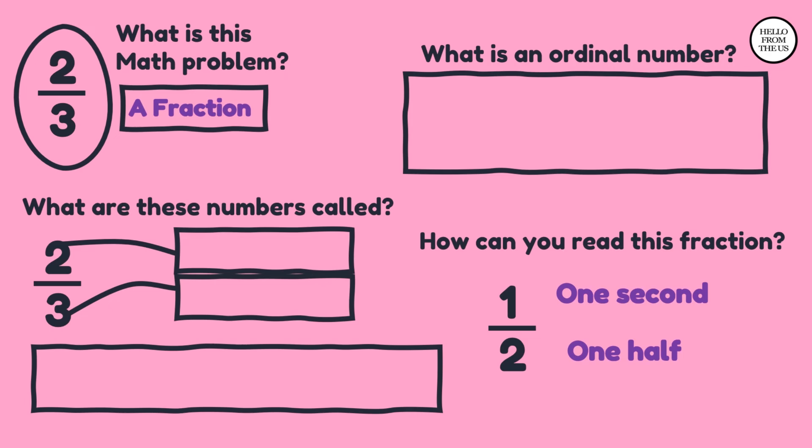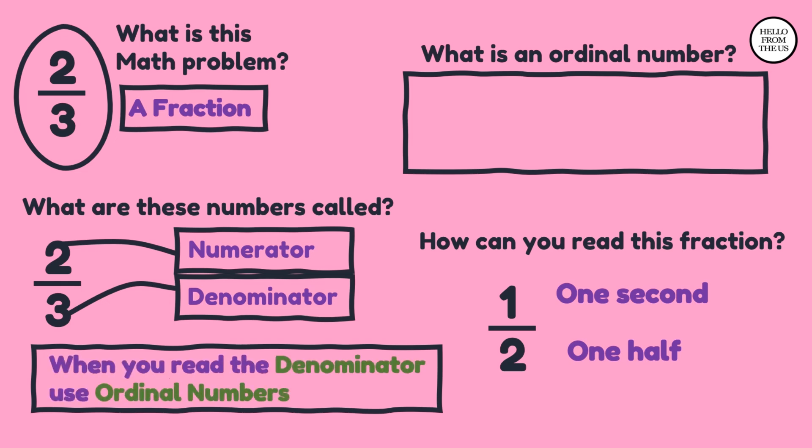What are these numbers called? The top number two is the numerator. The bottom number three is the denominator. Don't forget.